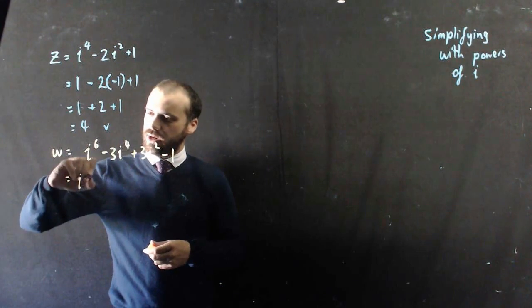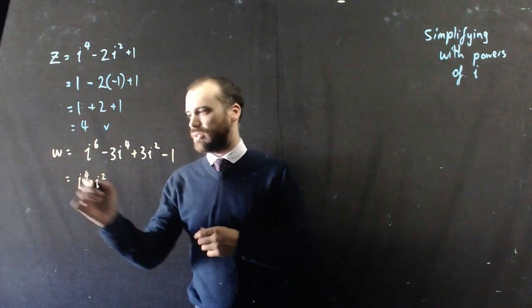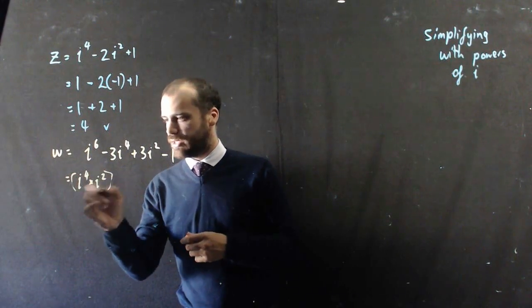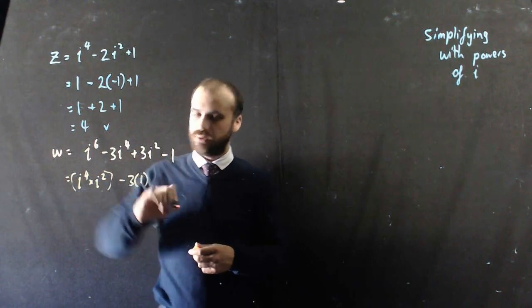So i to the 6, i to the 6 is the same as i to the 4 times i to the 2. So I'll just put that in some brackets and deal with that in a minute. So i to the 4 is just 1.